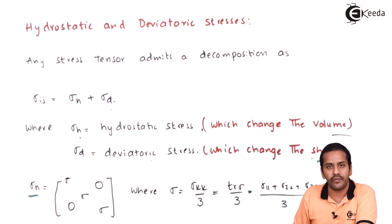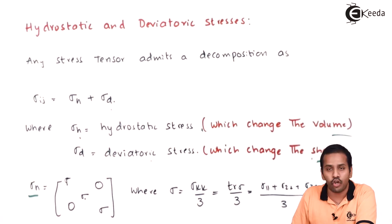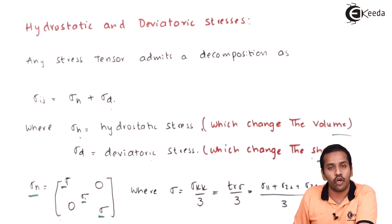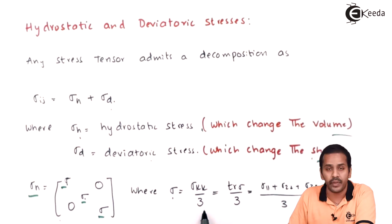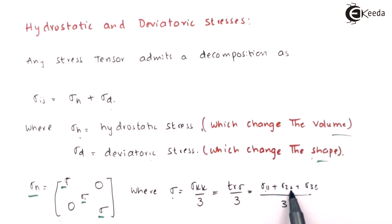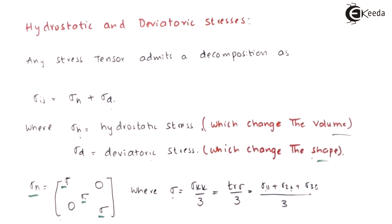The hydrostatic stress has only diagonal components; the off-diagonal components are zero. The value of the diagonal components is sigma equal to sigma_kk divided by 3, where k is a dummy index. So sigma_kk equals sigma_11 plus sigma_22 plus sigma_33 divided by 3 — it is the average of all diagonal components of the stress tensor.